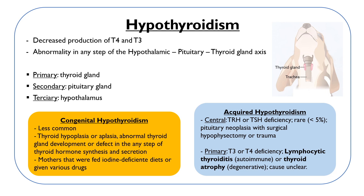On the other hand, acquired primary thyroid disease accounts for the majority of dogs with hypothyroidism. It can result from lymphocytic thyroiditis — a destructive autoimmune process in which there is infiltration of the thyroid gland by lymphocytes, macrophages and plasma cells, and progressive replacement by connective tissue. It can also result from thyroid atrophy, a degenerative process with gradual replacement of thyroid tissue by adipose and connective tissue. In either case, the cause for these conditions is unclear.